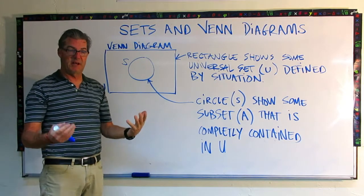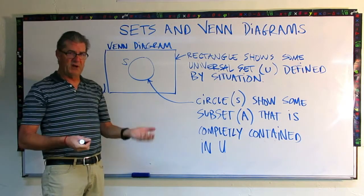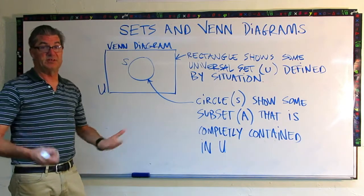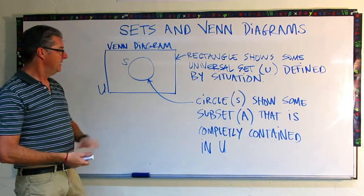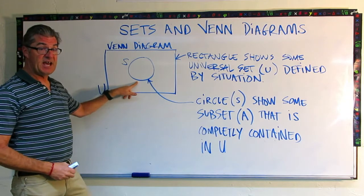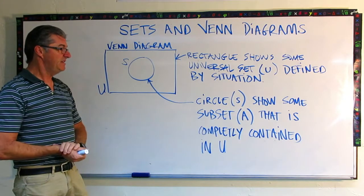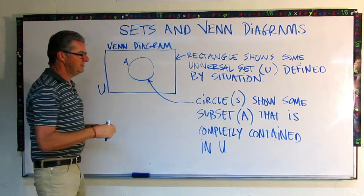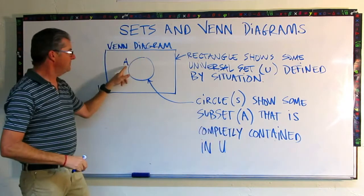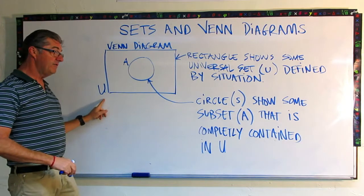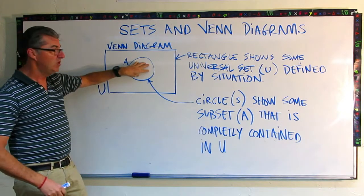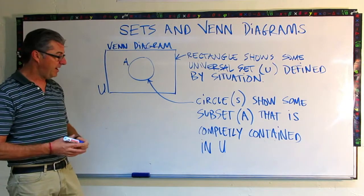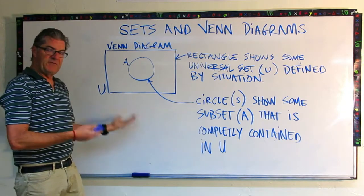So you might get something like all integers greater than six, or you might get something like all real numbers, could be anything you want. The circle inside is some subset A. So whatever you put in this circle has to be in the universal set. These are some of your definitions.